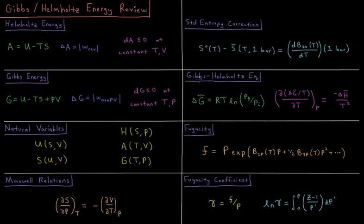We can then develop the Gibbs-Helmholtz equation where things like the change in molar Gibbs energy with respect to pressure is equal to RT times the natural log of the final pressure divided by the initial pressure. Or the partial derivative of the change in molar Gibbs energy over temperature with respect to temperature is equal to the negative change in molar enthalpy divided by temperature squared, which will be useful for calculating the temperature dependence of equilibrium constants later on.